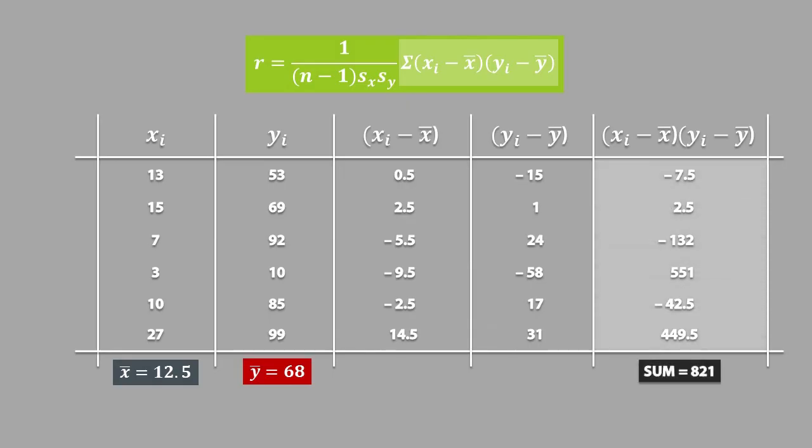The next step is to add up all these products together, and that gives us 821. We can now plug this value into the formula, and since we added 6 products, n will be equal to 6.